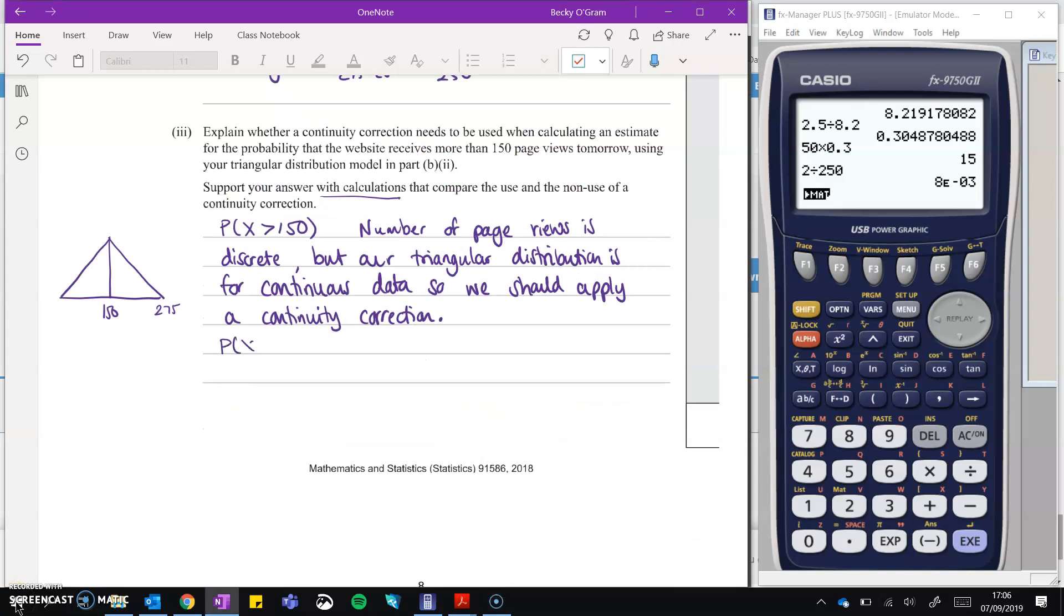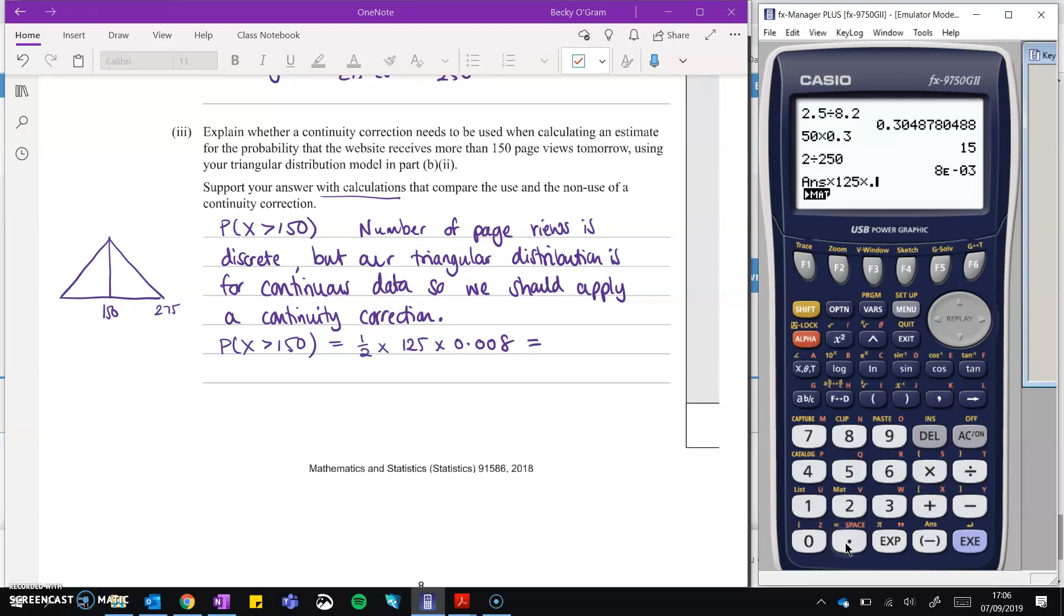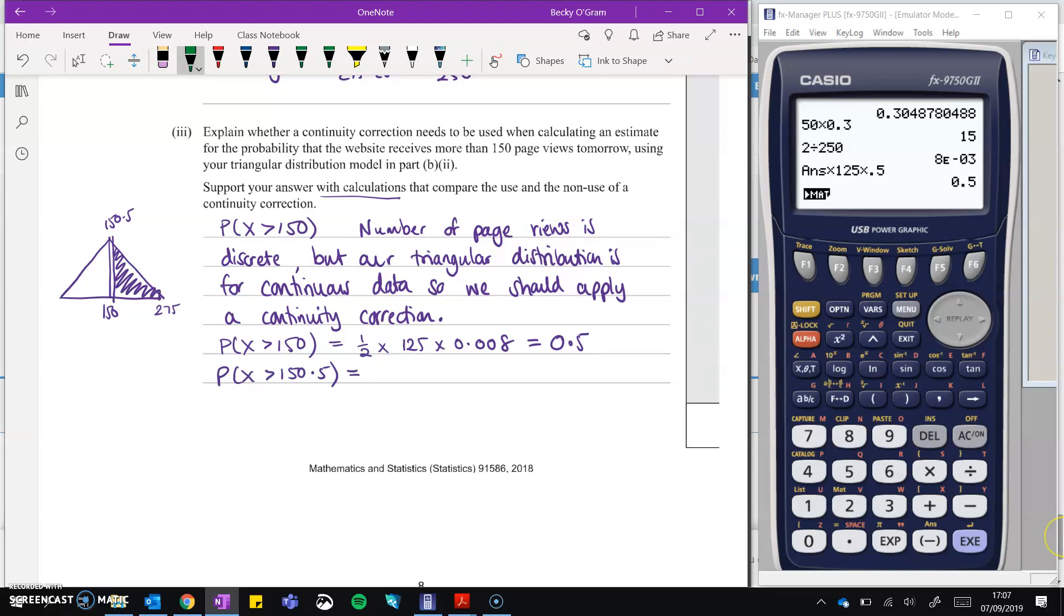Okay, comparing with or without a continuity correction. So if we do the probability that X is greater than 150 without the continuity correction, we would just be doing half base times height. So half times that 150 gap there up to 275. So that's 125 times 0.008, which comes to 0.5, obviously, because it was symmetrical. But if we do with the continuity correction, we want to go more than 150. So 150 is not included. It has to be more than 150. And we need to go 0.5. We're going to go to the right of 150 because we need to chop that off at 150.5 so that 150 does not get included when we do our little triangle.